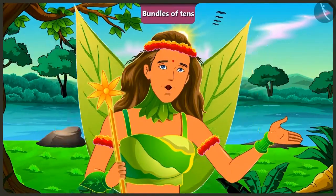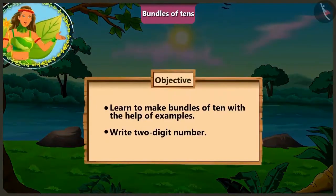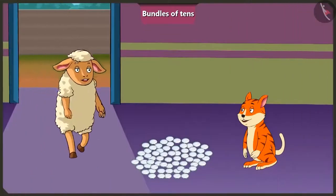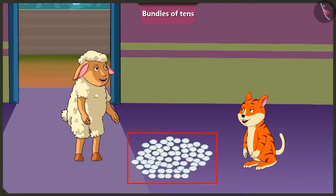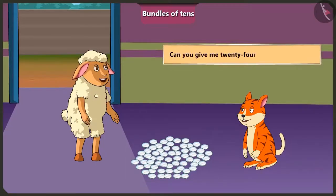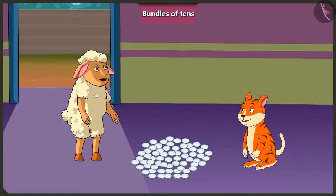Today, in this video, through some interesting examples, we will understand a little more about making bundles of ten and writing two-digit numbers. Hello, Lily. Did you make your wall piece? No, it is not yet completely ready. I am thinking of sticking some small mirrors too on the wall piece. Lily, can you give me twenty-four mirrors out of these? Yes, okay. But first tell me, how many mirrors are there in total? I will count them by making groups of ten.